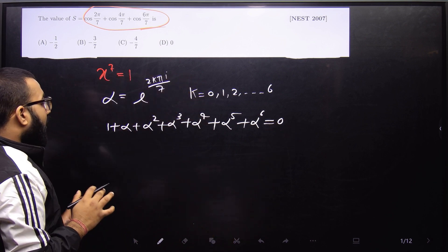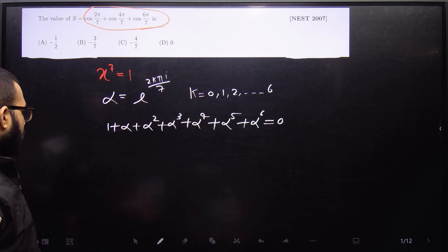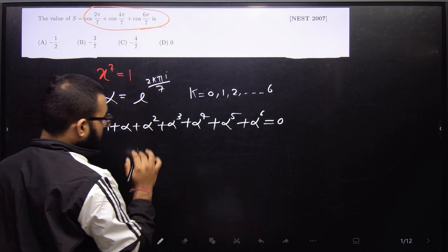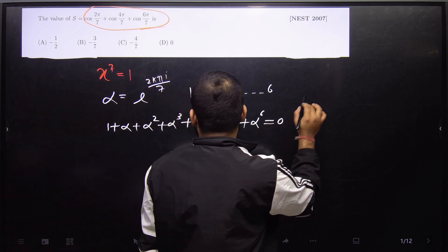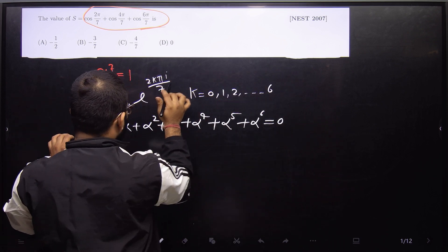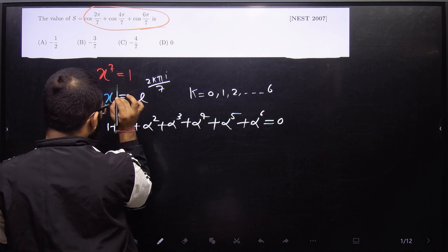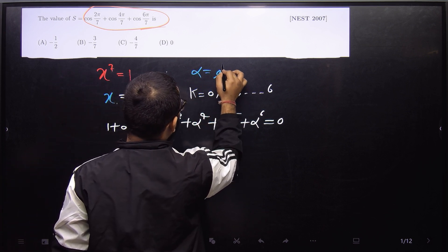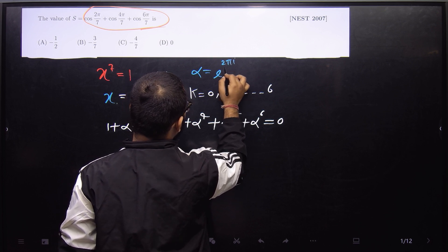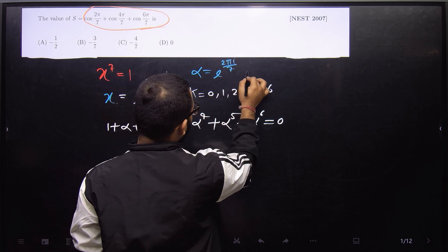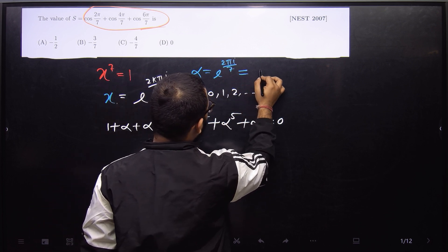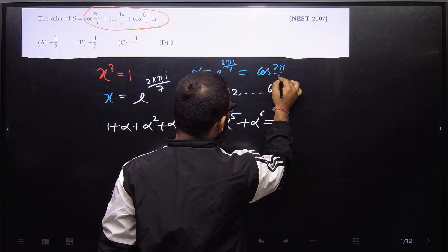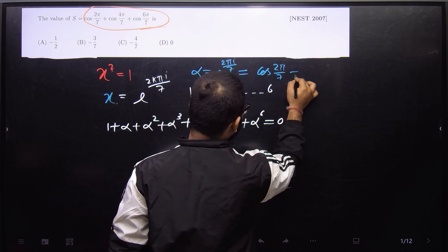Let us suppose α is the root. So 1 + α + α² + α³ + α⁴ + α⁵ + α⁶ = 0 because the sum of roots is 0. Now, α = e^(2πi/7), and in polar form that is cos(2π/7) + i·sin(2π/7).